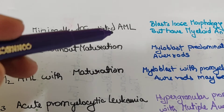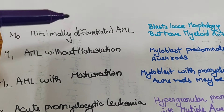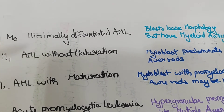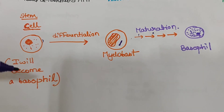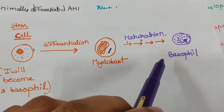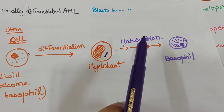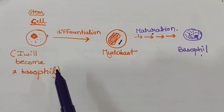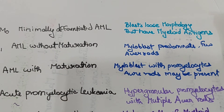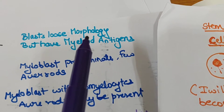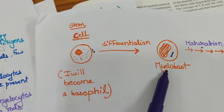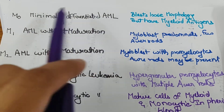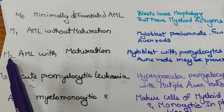M0 is minimally differentiated AML. By the name itself, we can see a cell that is not or minimally differentiated. For example, if a stem cell wants to become a basophil, it should first differentiate into a myeloblast. Differentiation is the first step where the cell decides what to become. In minimally differentiated AML, the blasts lose their morphology — we cannot identify what they want to become — but they have myeloid antigens on the surface which are specific to myeloblasts.